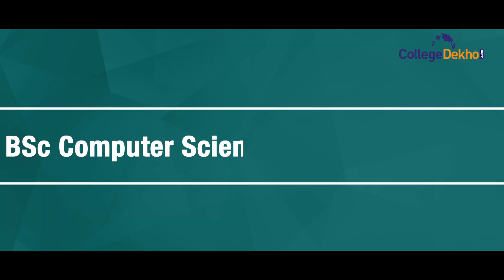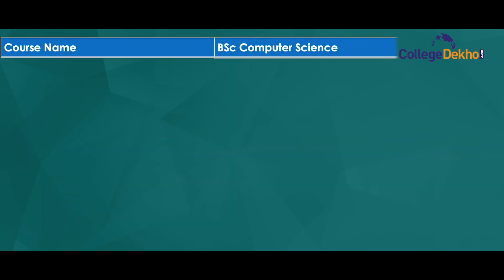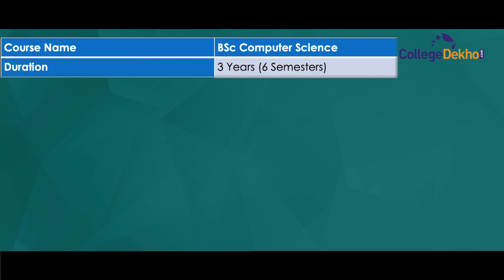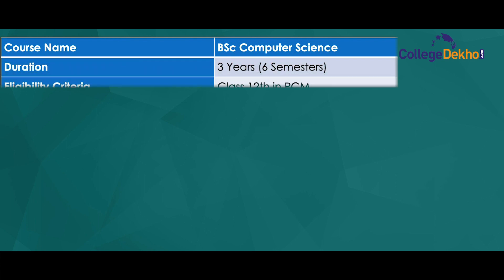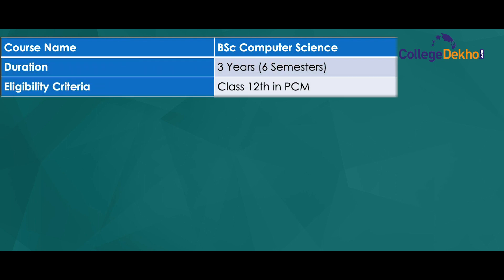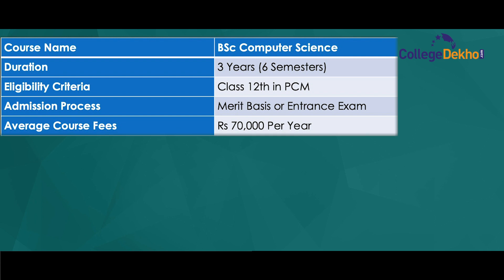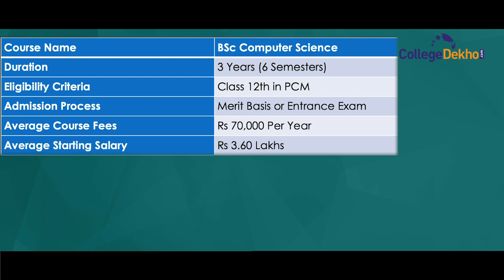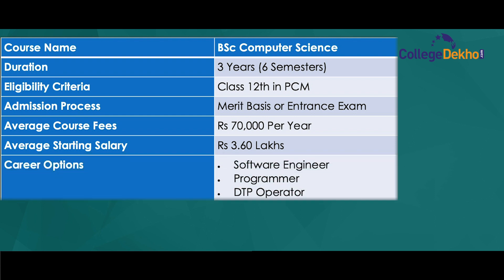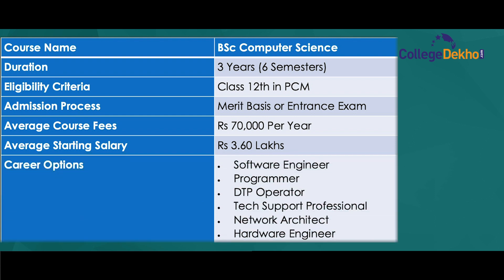Let's check the B.Sc Computer Science course highlights. Course name: B.Sc Computer Science. Duration: three years, six semesters. Eligibility criteria: Class 12th in PCM. Admission process: merit basis or entrance exam. Average course fee: Rs. 70,000 per year. Average starting salary: Rs. 3,60,000 per year. Career options include software engineer, programmer, DDP operator, tech support professional, network architect, and hardware engineer.